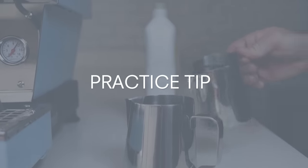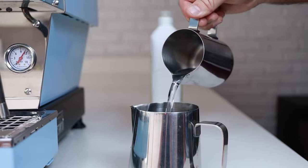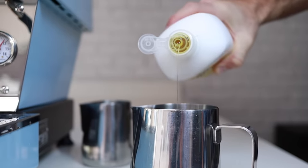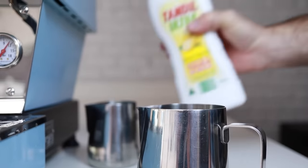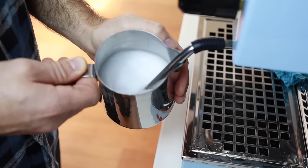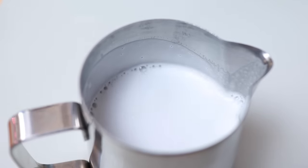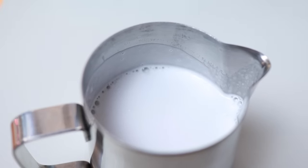So here's a tip for practicing without wasting heaps of milk. Pour some water into your jug and then add a couple of drops of washing up detergent. Now start to steam that mixture on the steaming wand and you'll notice that it creates a foam just like regular milk. You can even use this mix for practicing latte art if you've got some old coffee lying around. Just don't drink it.